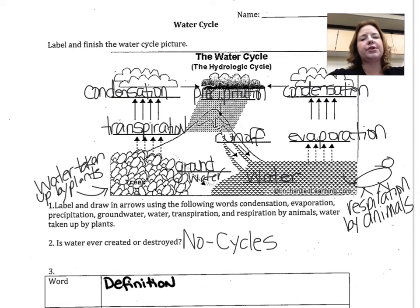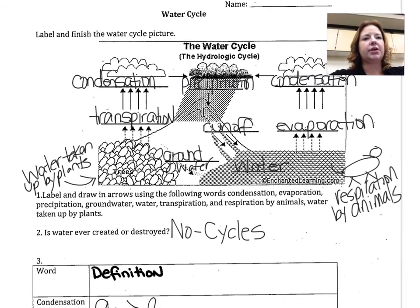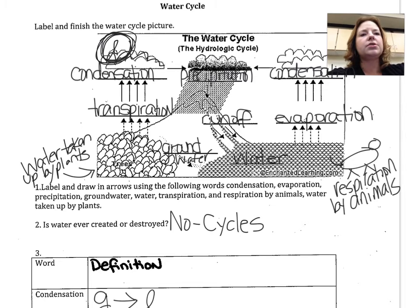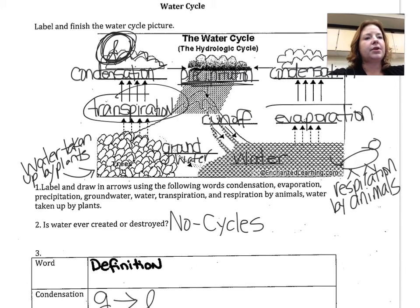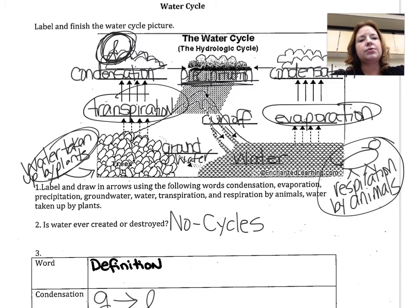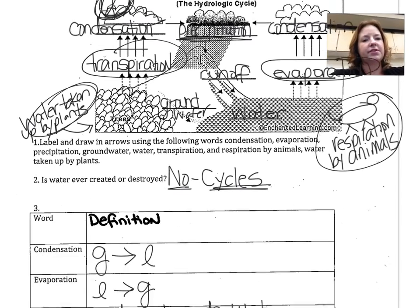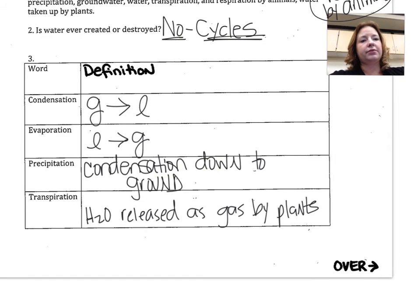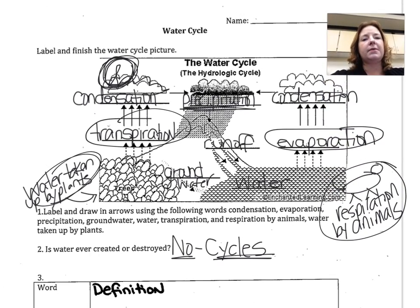Now that you've had some time to work on these worksheets, let's check your answers. The water cycle should be labeled with condensation by both clouds — condensation is actually water droplets as a liquid; those tiny droplets floating in the air are what clouds are. You should have precipitation in the middle, transpiration to the left, evaporation to the right, water taken up by plants, and a small animal for respiration by animals. For question two, the answer is no — water always cycles. Definitions: gas to liquid, liquid to gas, condensation down to the ground for precipitation, and transpiration is water released as a gas by plants.